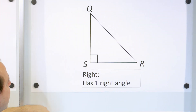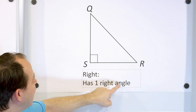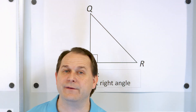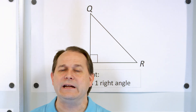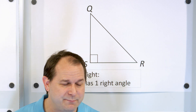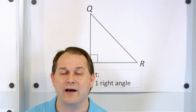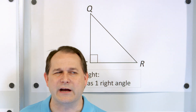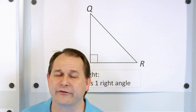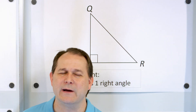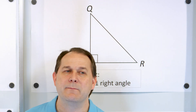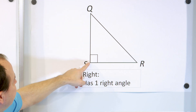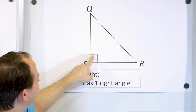Here we have another kind of triangle called a right triangle. It has one right angle — this little square symbol in the corner means 90 degrees. Right triangle — I can't even tell you how important it is. We have an entire course called trigonometry that is basically learning how to use right triangles. A right triangle is just a triangle where one of the angles is 90 degrees.